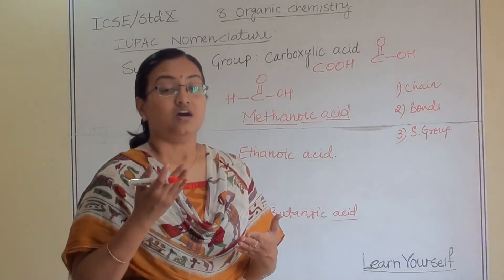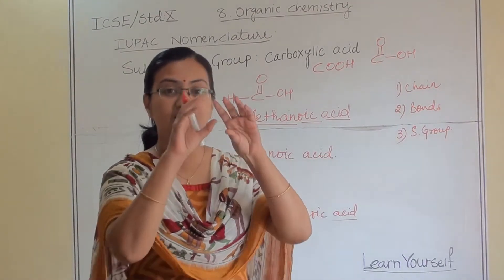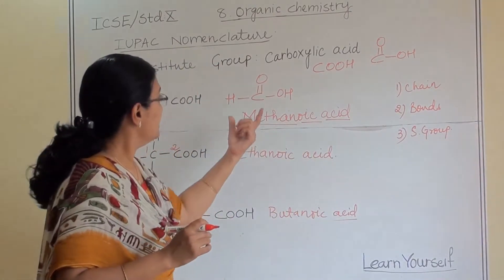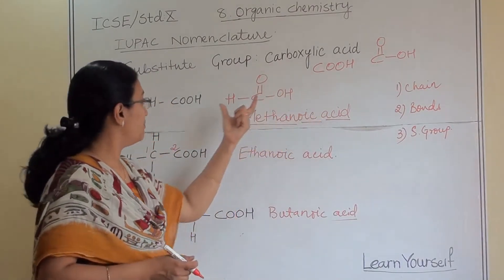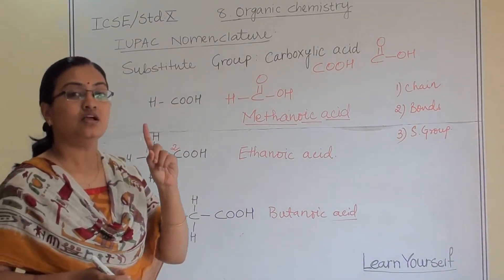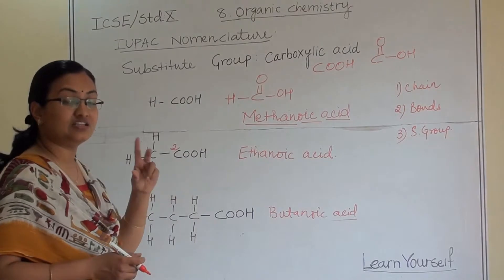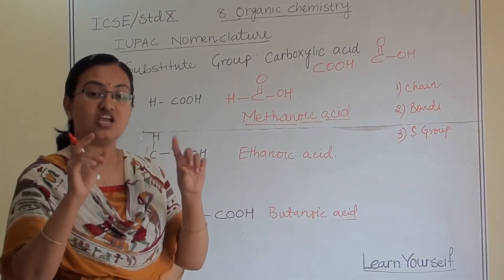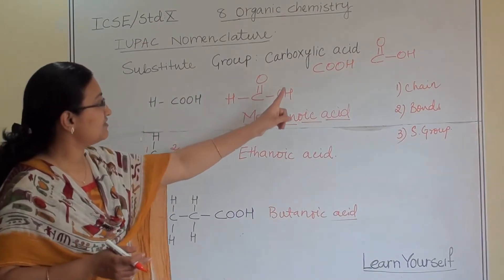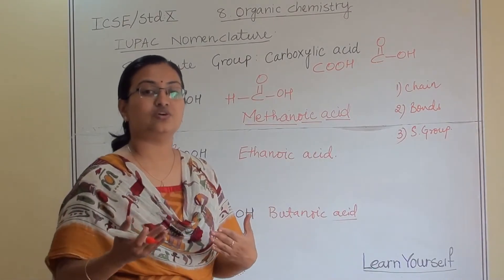An important distinction: for alcohol, the OH group has no carbon, so we count only the chain carbons. But in carboxylic acid, the COOH group itself contains one carbon atom, so that carbon is counted as part of the chain. This is why the suffix is '-oic acid': methanoic acid, ethanoic acid, butanoic acid, and so on.